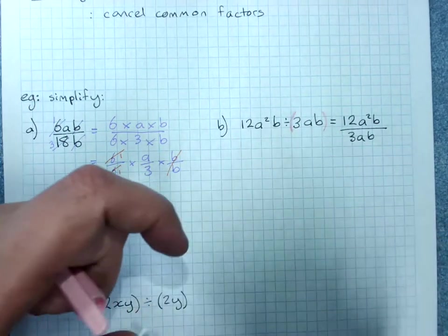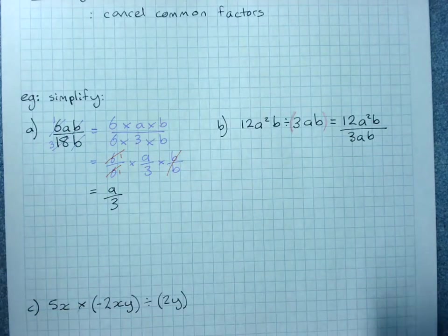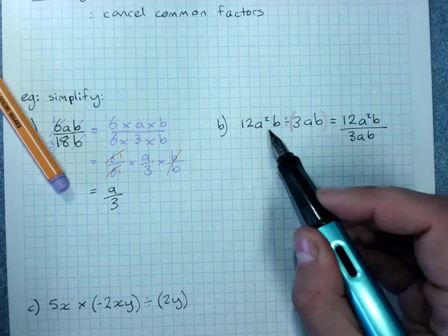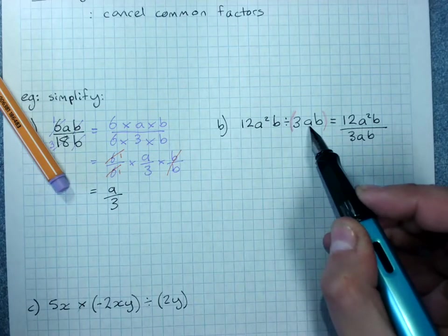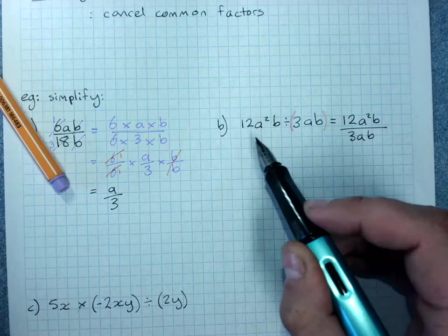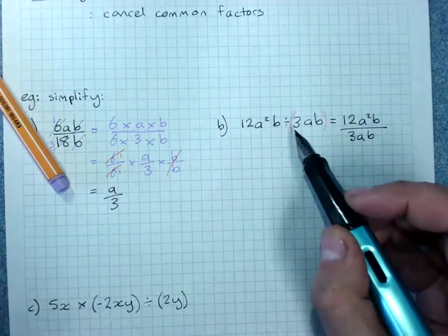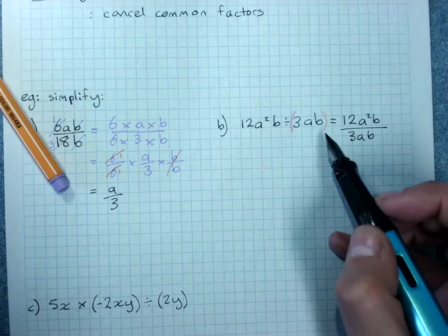If those brackets aren't there, there is a doubt whether or not I should do 12 times a squared times b divided by 3 times a times b or whether I should do all of this divided by all of that. Putting the brackets in removes that doubt.